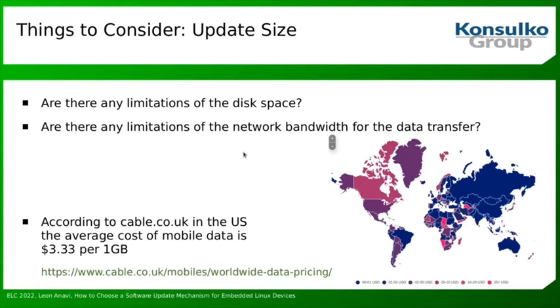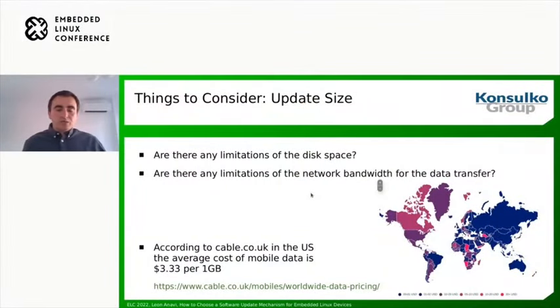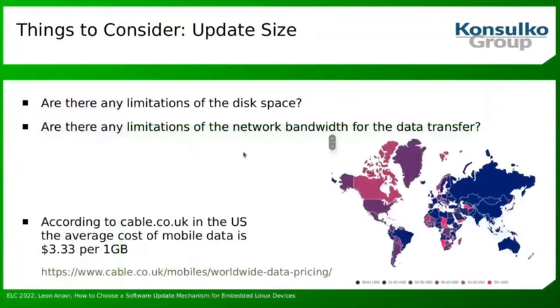The second question is: are there any limitations of network bandwidth for data transfer? This is particularly important if you are working on a solution that relies on mobile data to download the artifact to the device. According to cable.co.uk, in the US the average cost for mobile data is $3.33 per gigabyte. Of course, with a better contract you may have significantly better rates, but if you rely on mobile data to perform updates, this is not free. The bigger the update size, the greater the cost.